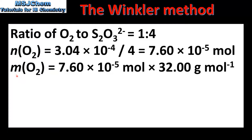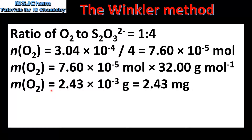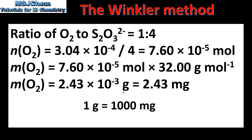Next we convert the amount in moles of oxygen to mass of oxygen. To do this we multiply the amount in moles by the molar mass of oxygen, which is 32.0 grams per mole. The mass of oxygen is 2.43 × 10⁻³ grams. Multiplying by 1000 to convert from grams to milligrams gives 2.43 milligrams.